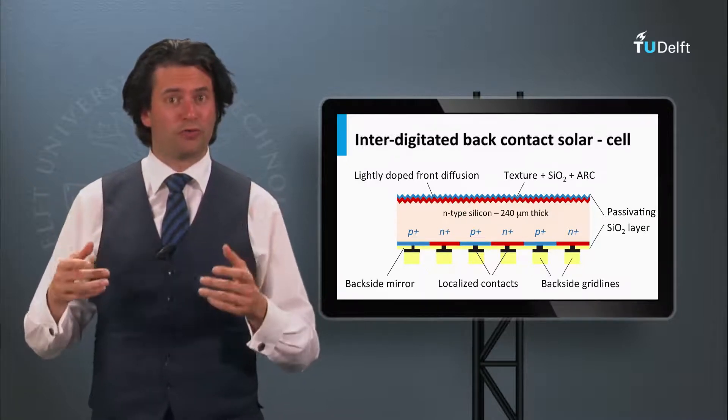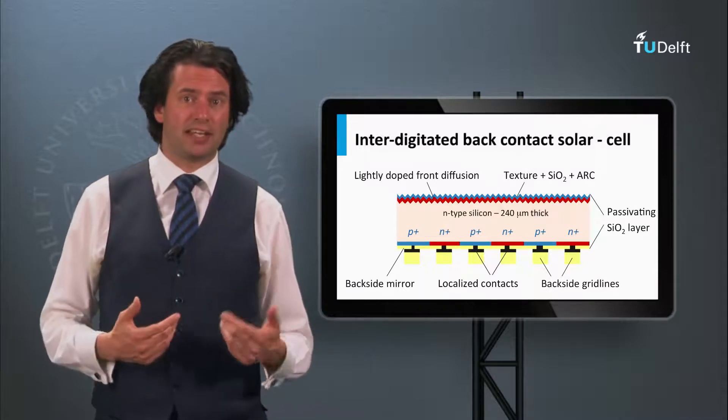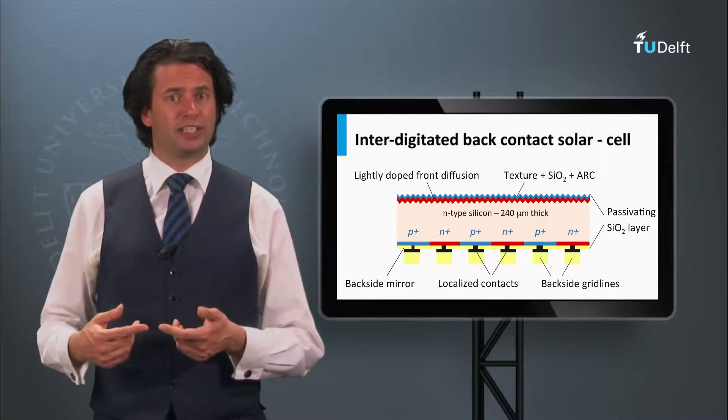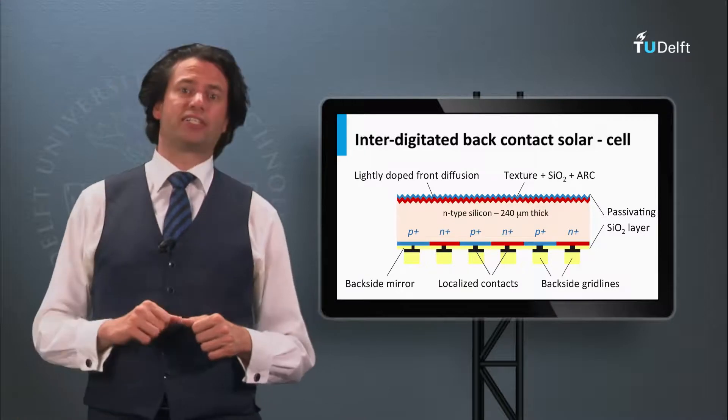All contacts responsible for collecting of charge carriers at the N and P side are positioned at the back of the crystalline wafer solar cell.